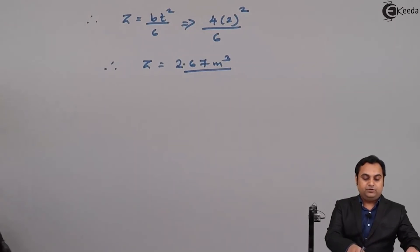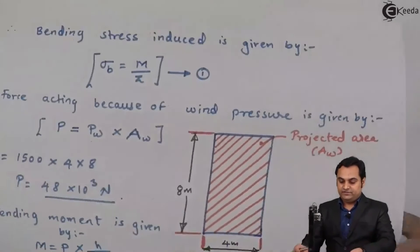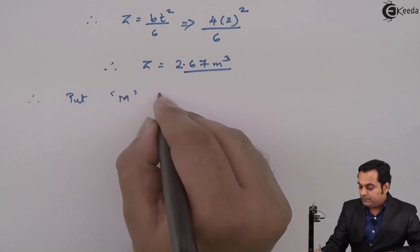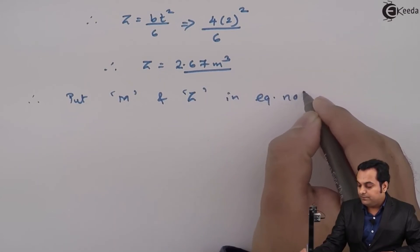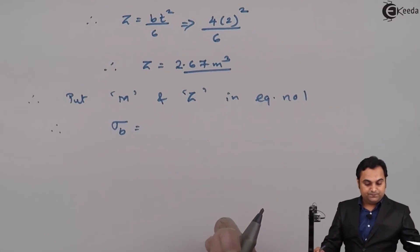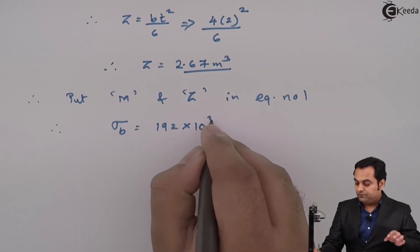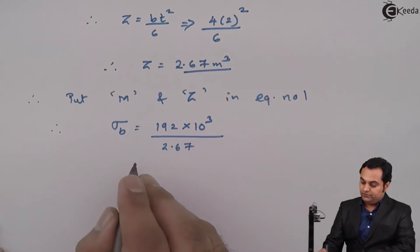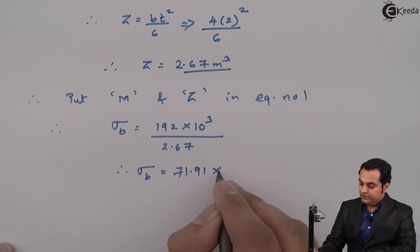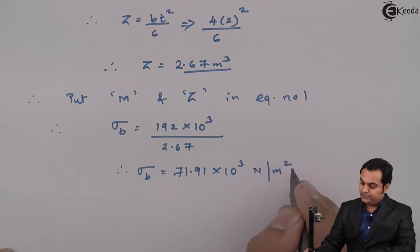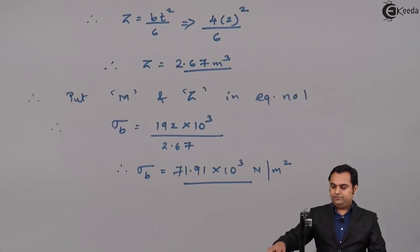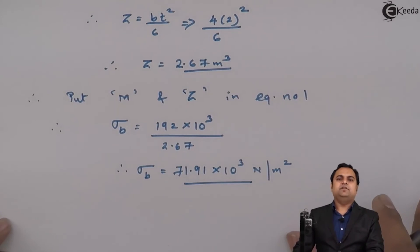After getting M and Z values, I put them into equation number 1 to get bending stress Sigma_b. Sigma_b = M/Z = (192 × 10³) / 2.67 = 71.91 × 10³ Newton per meter square. This is the value of bending stress.